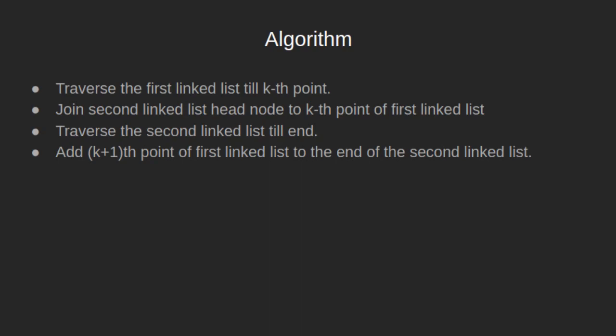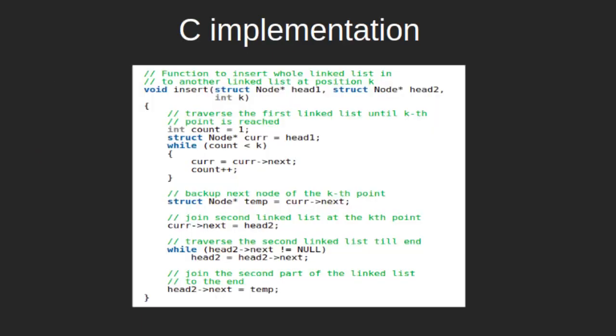Let's see the algorithm to solve the above problem. First, traverse the first linked list till the kth position. After that, join the second linked list's head node to the kth node of the first linked list, then traverse the second linked list till the end. The last step is to add the (k+1)th node of the first linked list to the end of the second linked list. Now let's see the C implementation. The return type of this function is void since it only modifies the linked list. The function takes 3 arguments: head of the first linked list, head of the second linked list, and an integer k — the position where the second linked list is to be inserted.